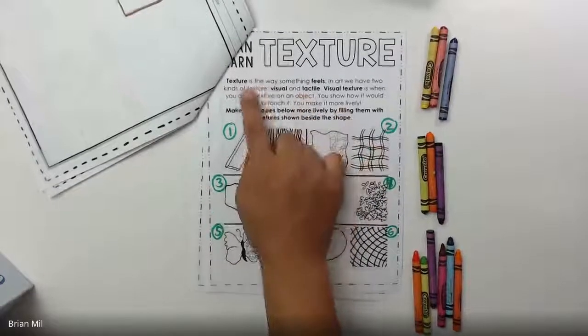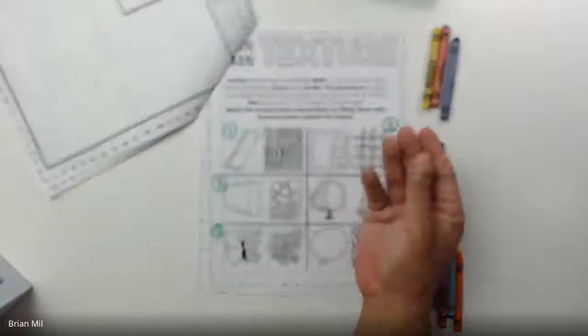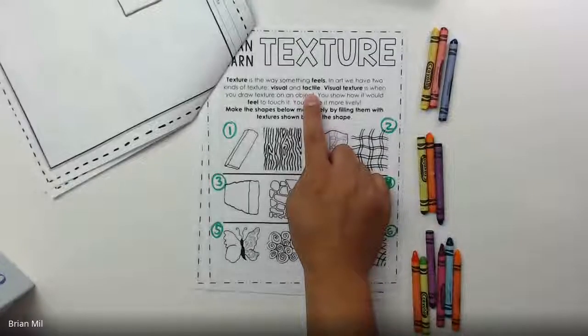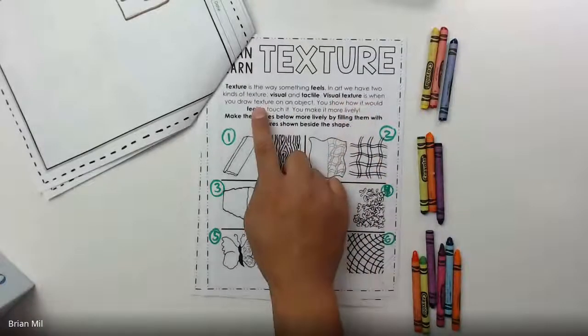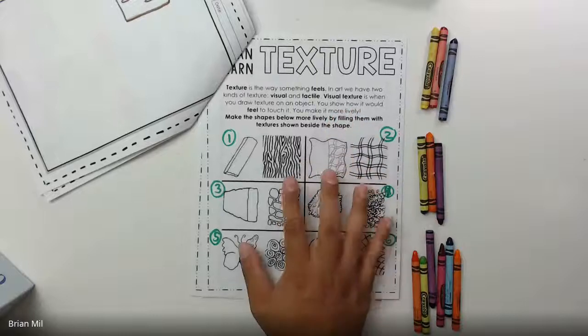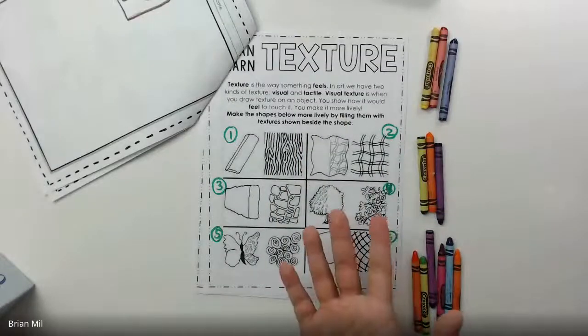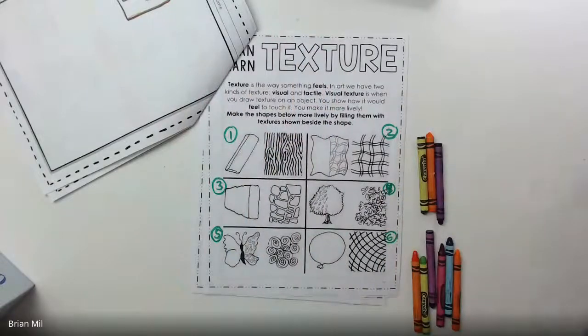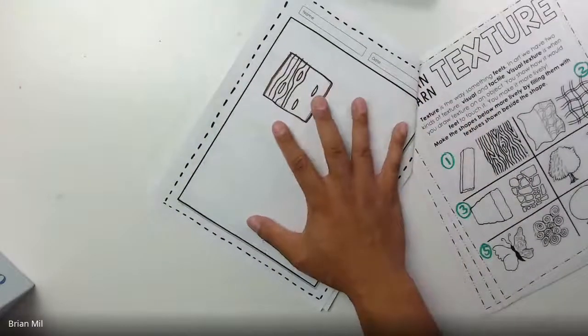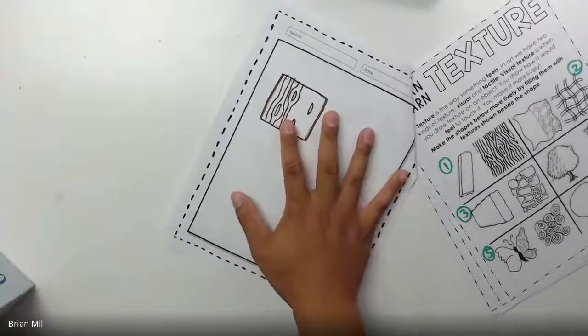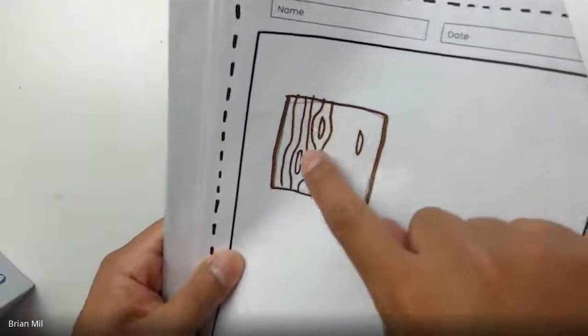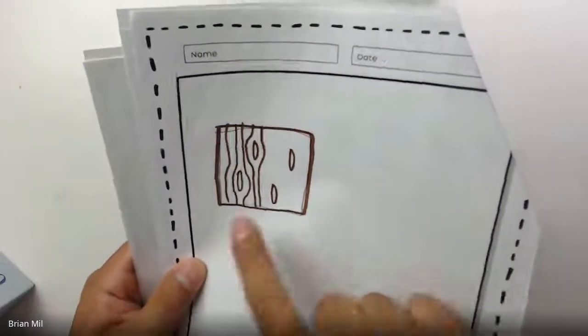So it says here, texture is a way something feels. In art, we have two kinds of texture. There's visual texture and there's tactile texture. Visual texture is when you draw texture on an object. Then you show how it would feel to touch it to make it more lively. So what I mean by that is that if it's like here, for instance, over here on the side, I did this last class. So this is a piece of paper, right? And it's not technically wood, even though it's made out of wood.